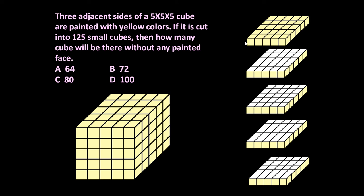If you see layer 1 — the top layer — all cubes are having at least one side painted, so it will give 0 such cubes which don't have any painted face.